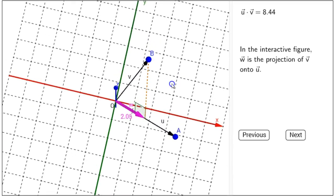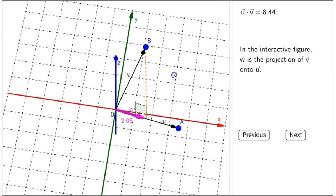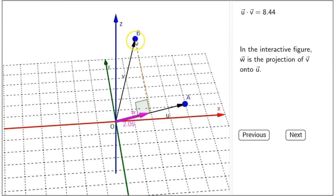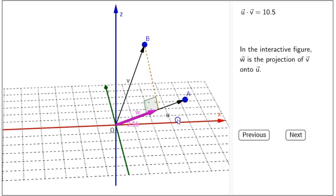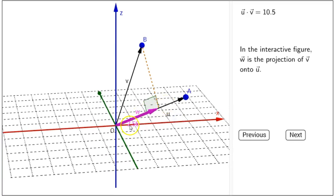Another way that I like to think about projection is asking how much of V lies in the direction of U. What component of V is in the U direction?